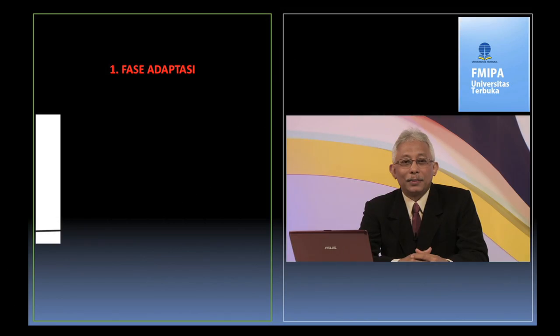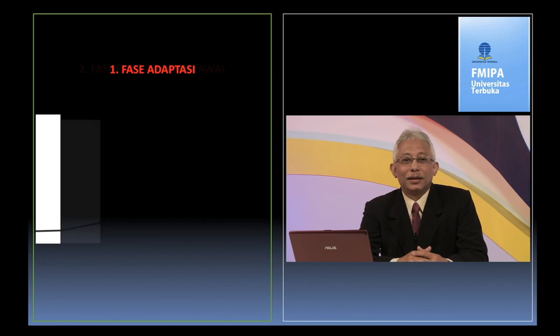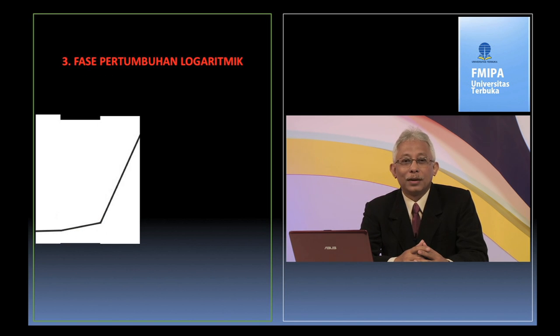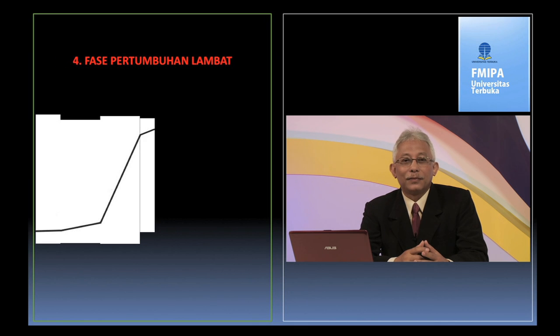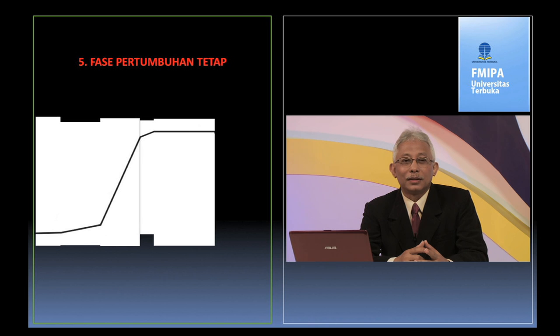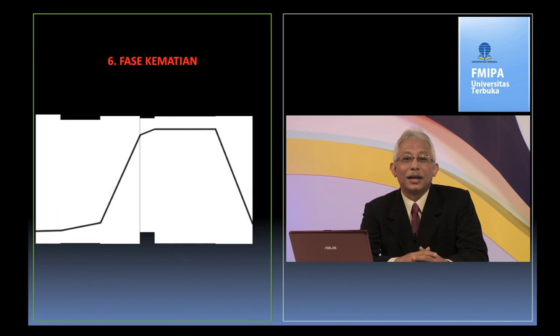Jika suatu populasi sel mikroorganisme ditempatkan dalam suatu lingkungan dengan komposisi zat gisi dan lingkungan yang baru, maka populasi sel atau kultur akan mengalami tahap-tahap pertumbuhan sebagai berikut: pertama, fase adaptasi; kedua, fase pertumbuhan awal; ketiga, fase pertumbuhan logaritmik; keempat, fase pertumbuhan lambat; kelima, fase pertumbuhan tetap; keenam, fase kematian.